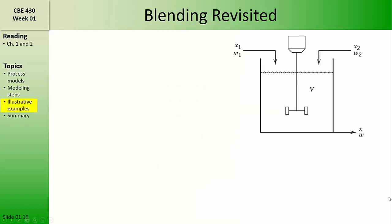To illustrate the development of dynamic process models, we'll again consider the blending tank. We considered the blending tank in Chapter 1, which had a constant volume overflow. This version of the blending tank has the effluent coming out from the bottom of the tank, so the volume of the fluid in the tank may vary with time.